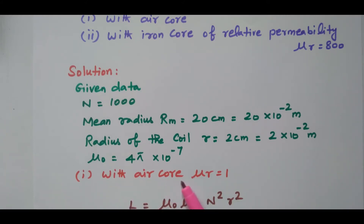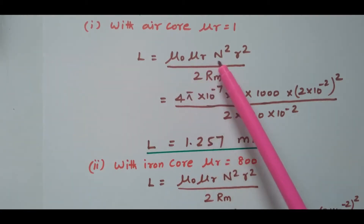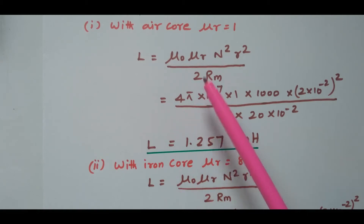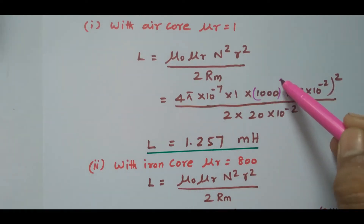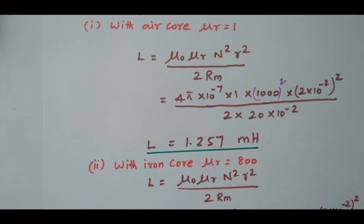For the first condition — with air core, μr equals 1 — the inductance of the toroid is L equals μ₀ μr N squared r squared divided by 2Rm. Substituting: μ₀ = 4π×10⁻⁷, μr = 1, N = 1000, r = 2×10⁻² m, Rm = 20×10⁻² m. After simplifying, L equals 1.257 milli-henry (1.257×10⁻³ H).